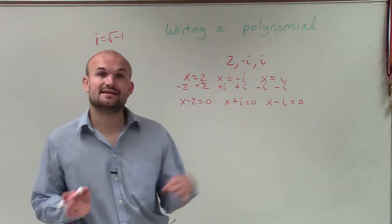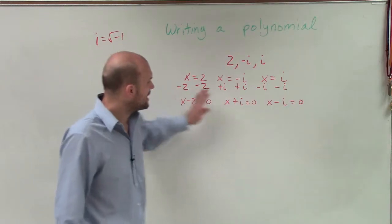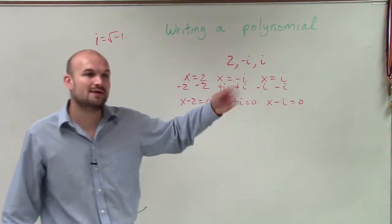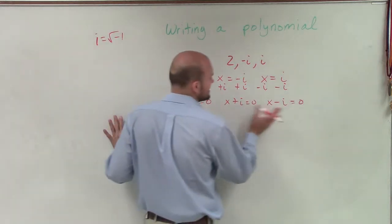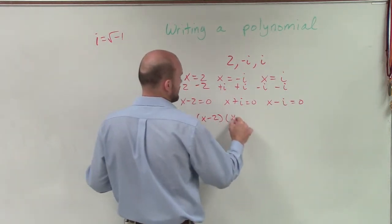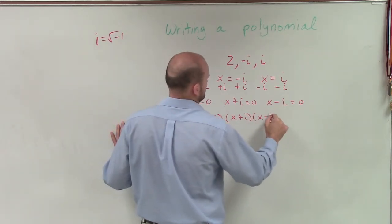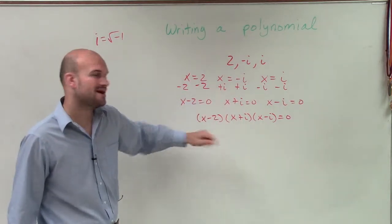OK. So now I set them all equal to 0, but I still don't have anything close to a polynomial. But remember, from setting them all equal to 0, I'm working the 0 product property backwards. So now I can set these as all of a product equal to 0. All right. This is just the 0 product property working backwards.